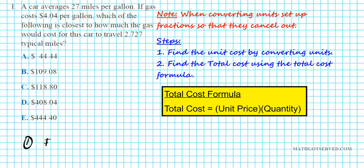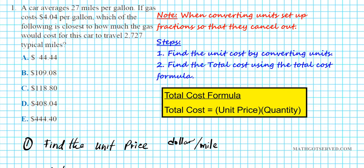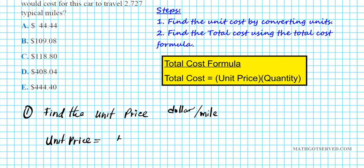Let's find the unit price. Unit price is basically the dollar-per-mile cost — how much does it cost per mile? If you know how many dollars it costs per mile, you can simply multiply it by the total number of miles, which is the quantity, to find the total cost. So unit price equals: we know gas is $4.04 per gallon, so that's $4.04 for every one gallon.